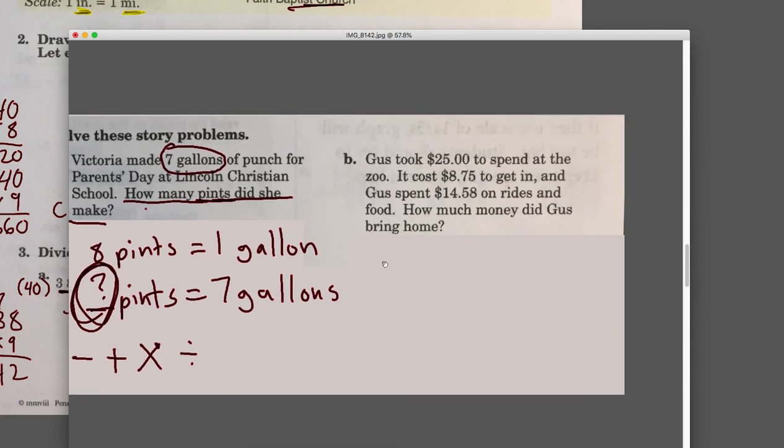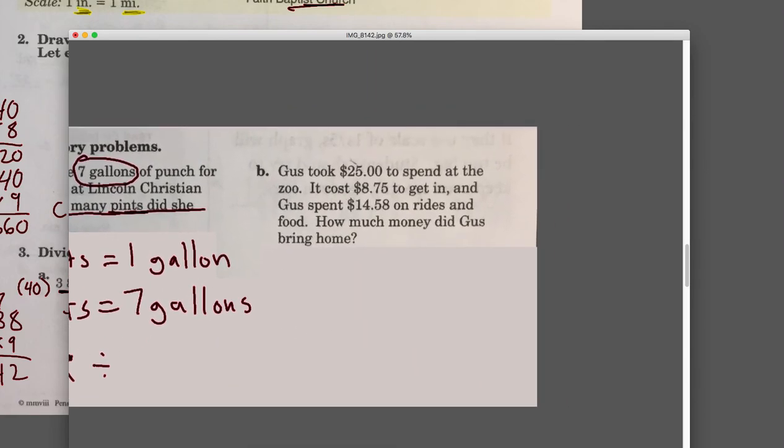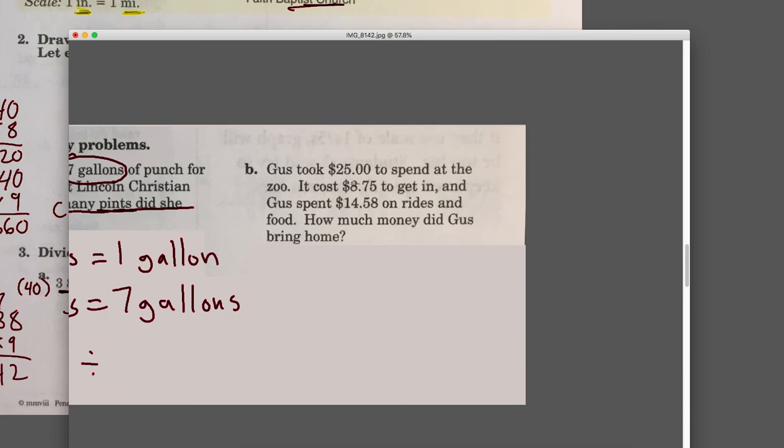For B, let's read this together. Gus took twenty-five dollars to spend at the zoo. It costs eight dollars and seventy-five cents to get in, and Gus spent fourteen dollars and fifty-eight cents on rides and food. How much money did Gus bring home? So if he started with twenty-five dollars and he spent eight dollars and seventy-five cents and he spent another fourteen dollars and fifty-eight cents, what do you think I need to do to figure out how much he has left?